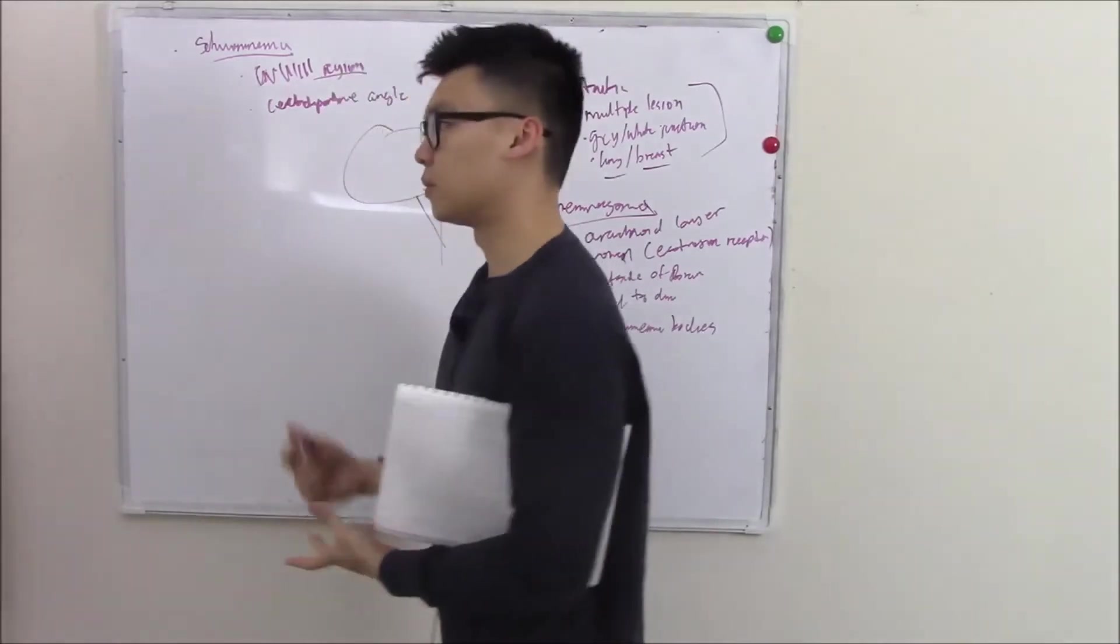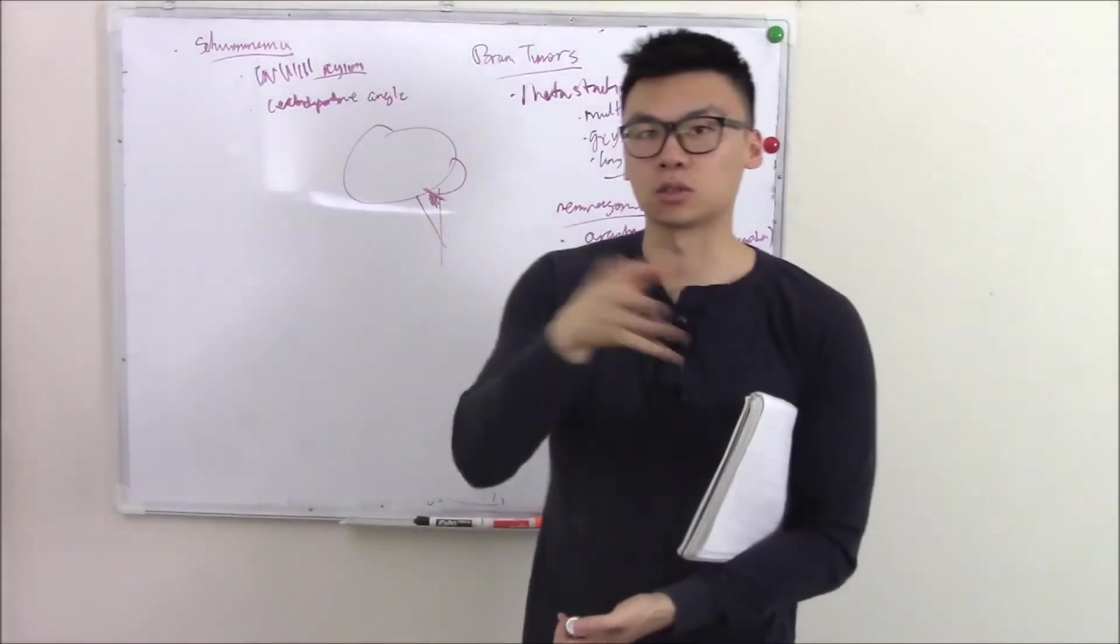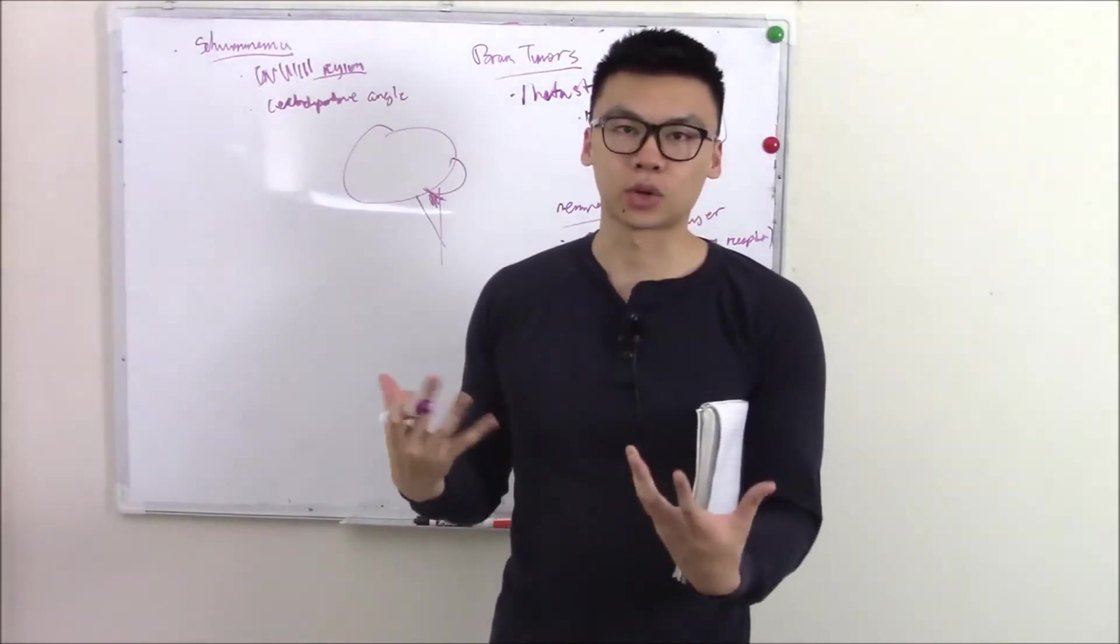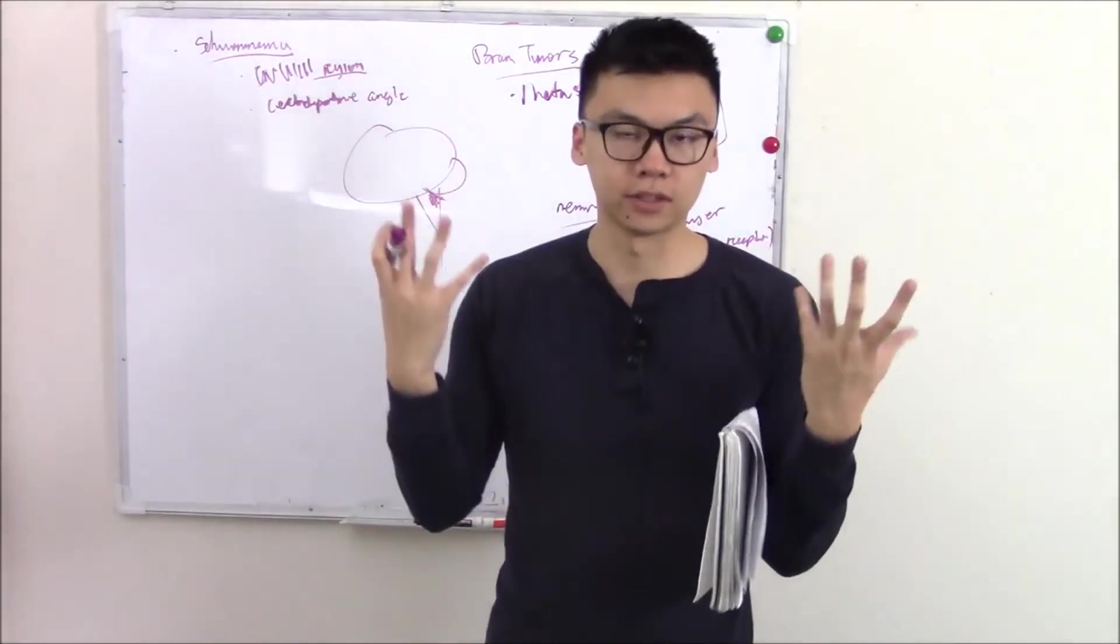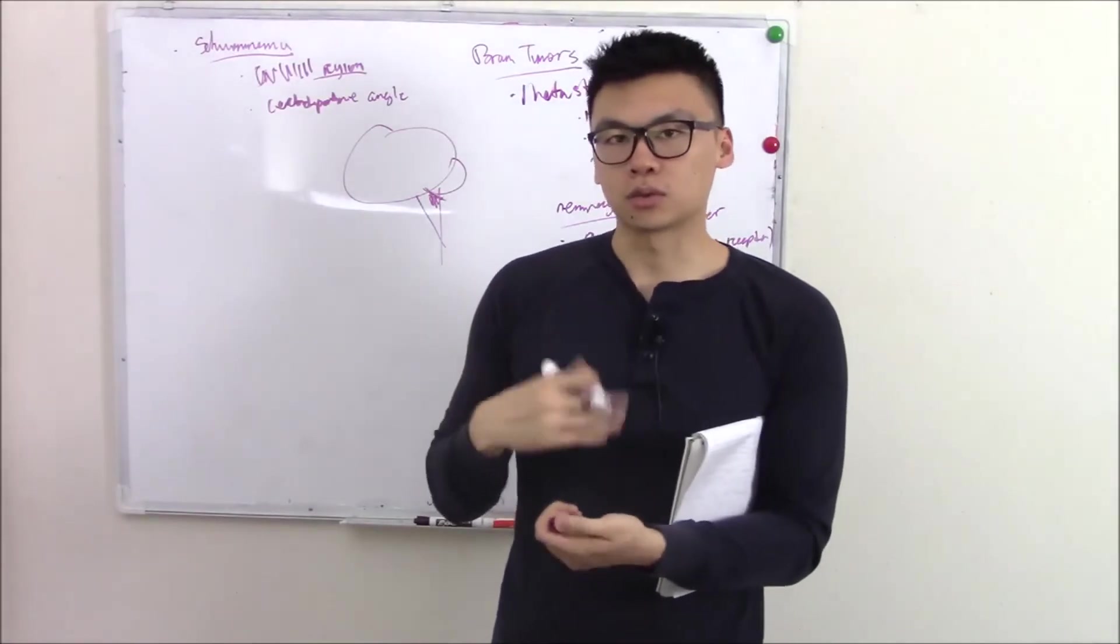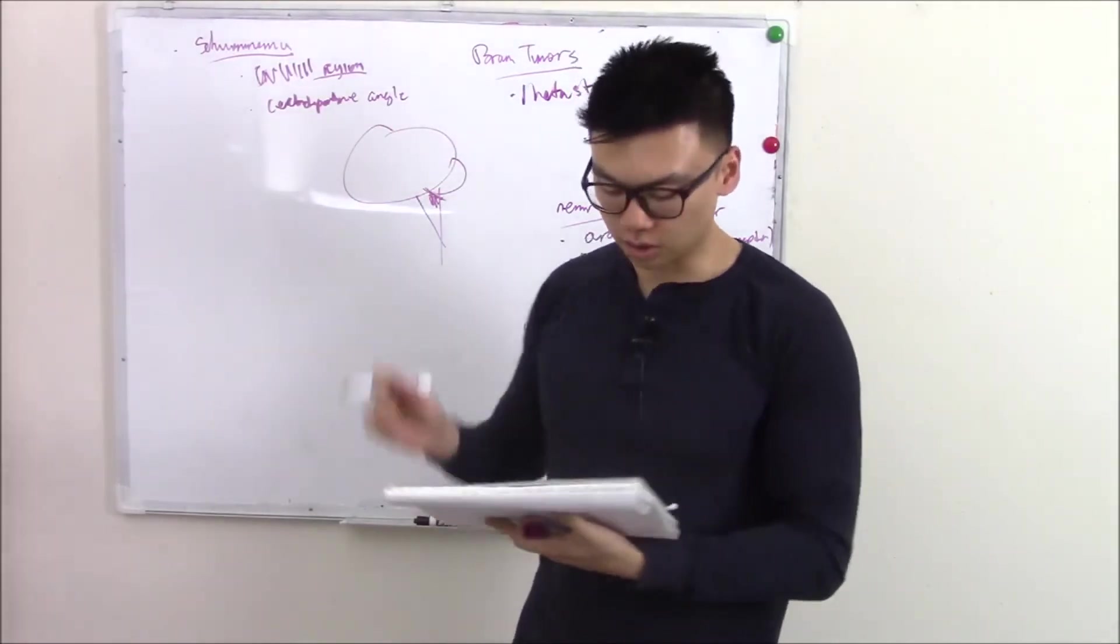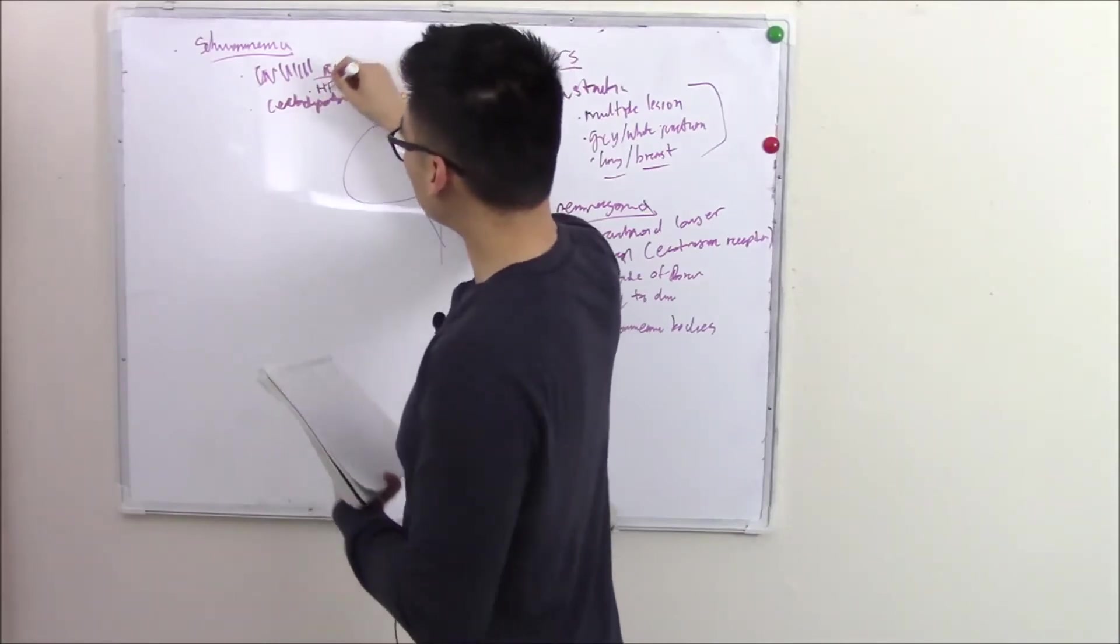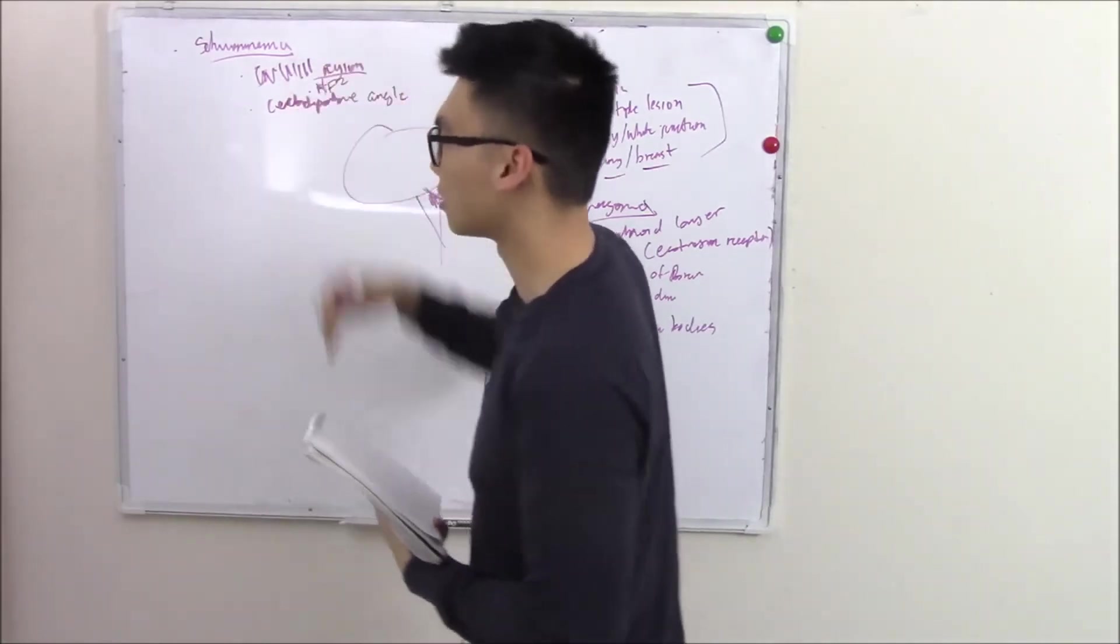Now schwannomas can pop up sporadically, but if you have bilateral schwannomas, that's not normal. It's usually bilateral in your CN8 region, cranial nerve 8 region. So you get deafness. That's associated with something we'll talk about in our next video. That's associated with neurofibromatosis type II. We'll talk about that in our next video.